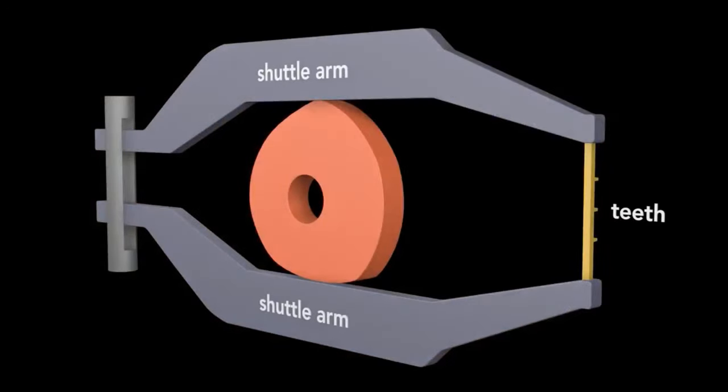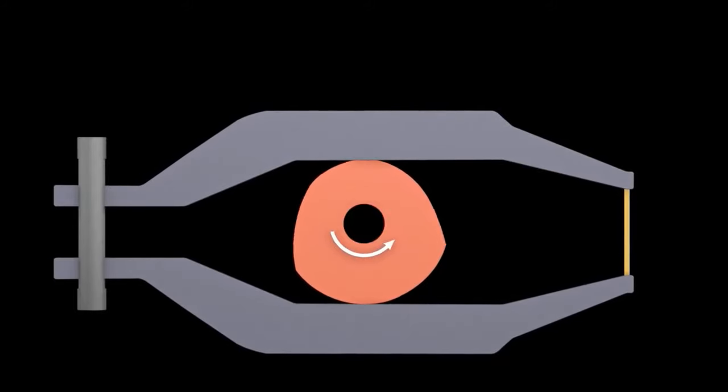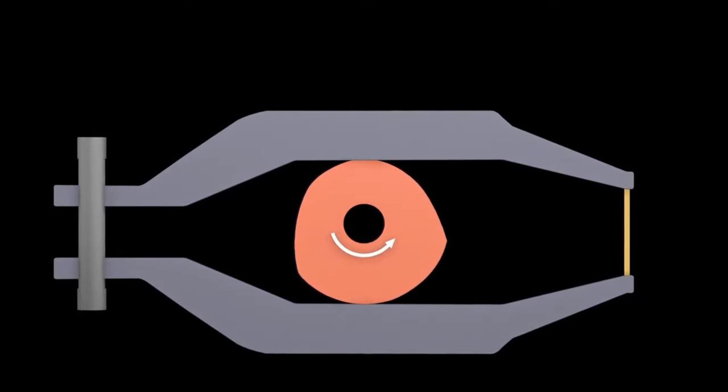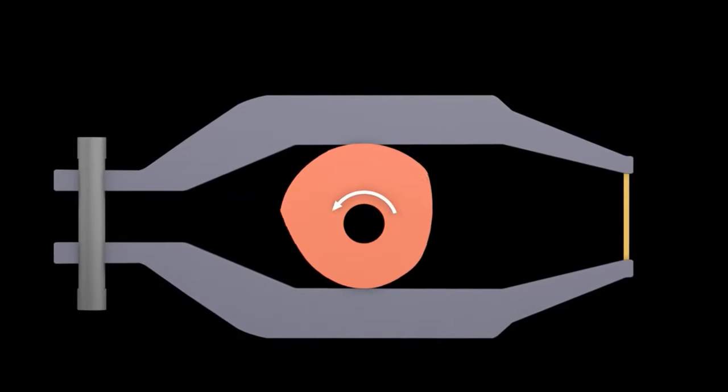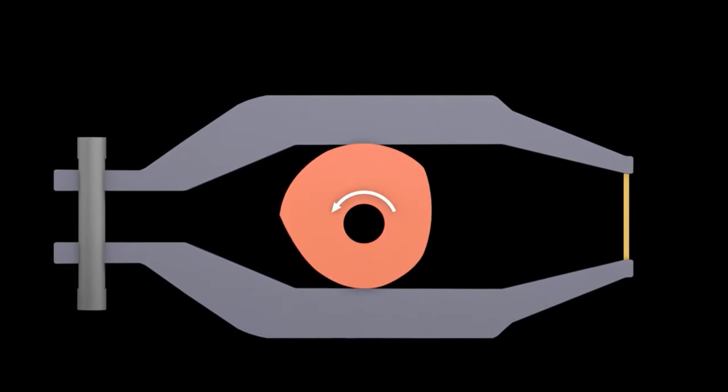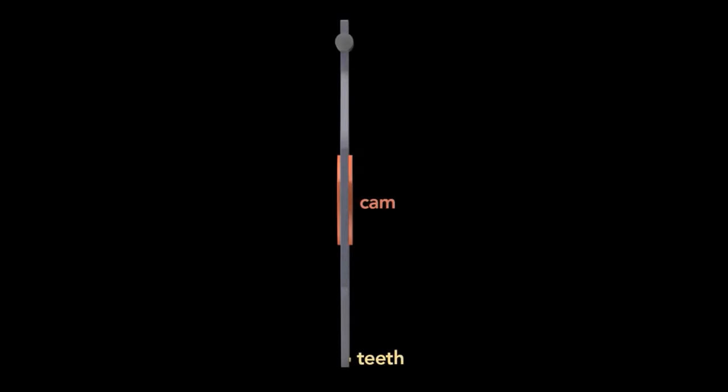Two shuttle arms hold the teeth of the shuttle in place. In between the arms is an eccentric cam. This cam rotates with an axle and moves the shuttle arms up and down. The outline of the cam has a constant width so that the distance between the arms doesn't change. The cam shape holds the shuttle steady at the top and bottom of its travel.